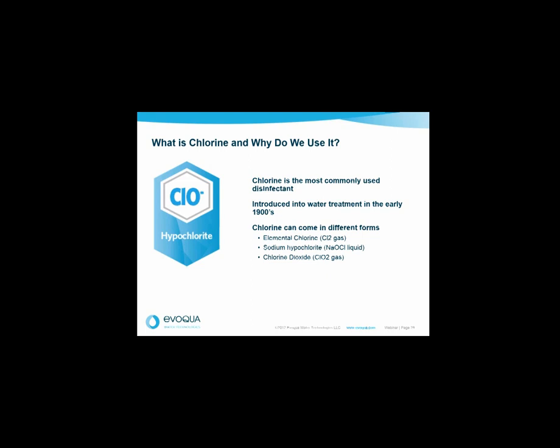Thank you. Good morning, everybody. I hope this is proving a little educational for all of you. I'm going to start with the same foundational slide that John went through — what is chlorine and why do we use it? Chlorine is a very powerful oxidizing agent, making it a highly efficient disinfectant. It has a very high ORP — oxidation reduction potential — and what this does is kill disease-causing pathogens, bacteria, viruses, and protozoa that commonly grow in your water supply, in reservoirs, on the walls of your water mains, and in storage tanks. Chlorine has been around for over a hundred years in water treatment, starting in the late 1800s but fully developed in the early 1900s.